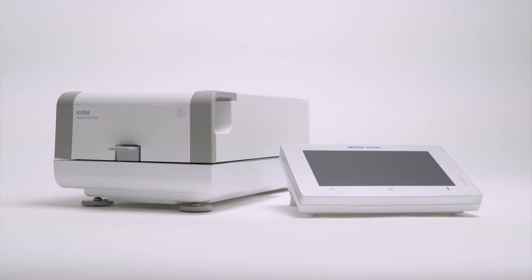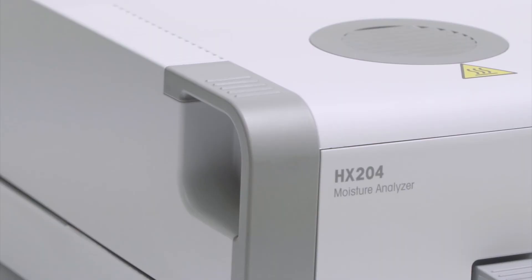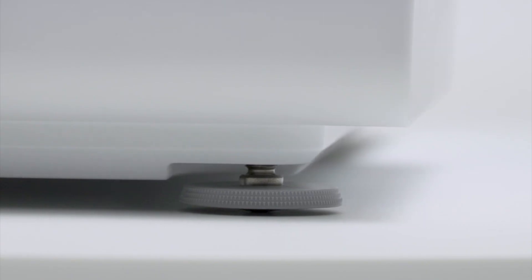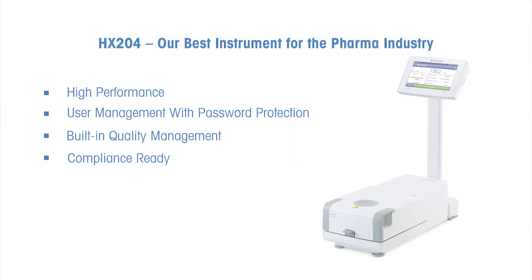All these important features are included in the Mettler Toledo HX204 moisture analyzer. This excellence level instrument offers various printing, saving, and other data management options. It also includes customizable user management with password protection and is an excellent alternative to the drying oven method.